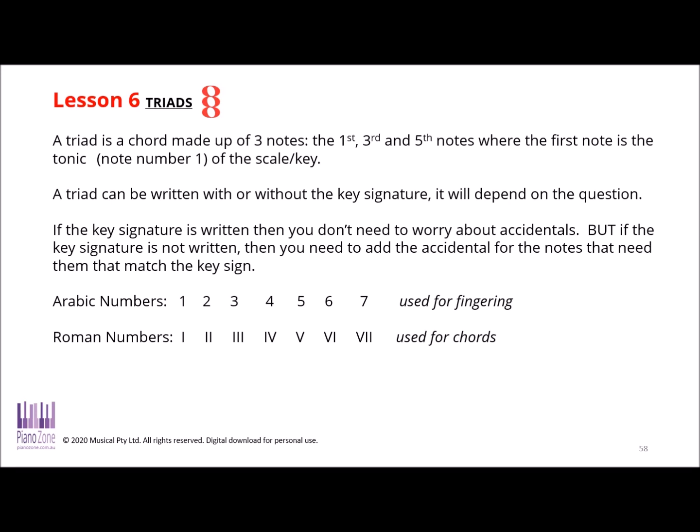Now there is one thing that you do need to know and that's the difference between Arabic numbers and Roman numbers. So Arabic numbers are the ones that we use for fingering when we're playing our instrument, and those are the numbers that you use in maths that you already know about. Roman numbers are the ones that we use for chords, and we use the different systems so that we can tell the difference in our sheet music between what we're reading. So if you haven't seen these before, this is what they look like.